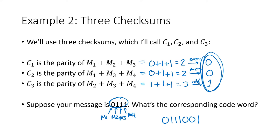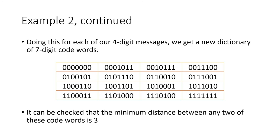We do that for each of our four-digit messages, which gives us 16 seven-digit code words. These first four digits are the message — the actual information you want to send — and now we have three check digits at the end. It's very tedious, but we can check every pair of code words, and the minimum distance between any two of them is three. This accomplishes what we were trying to do.